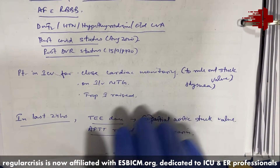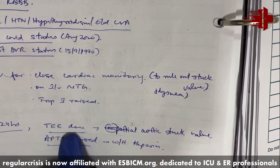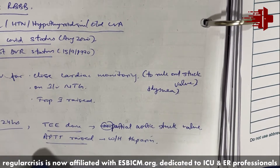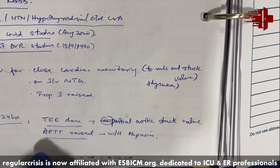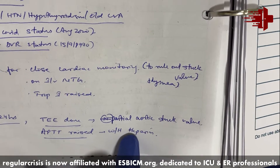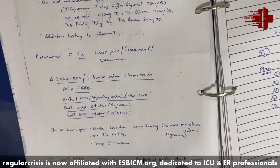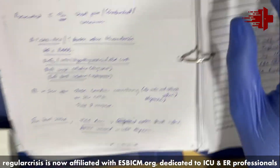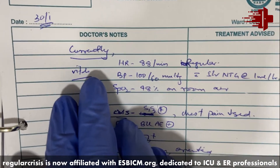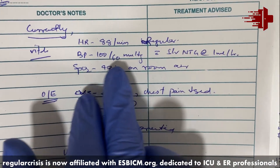In the last 24 hours, the significant event was that we performed a transesophageal echocardiography, which showed a partial aortic stuck valve. The patient was put on heparin infusion, but because the aPTT was raised, heparin was stopped. So in the last 24 hours, we arrived at the diagnosis that the patient has a partial stuck valve.